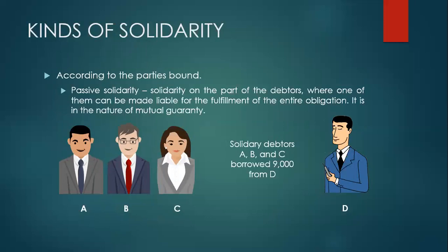Now let's go to the kinds of solidary obligation. According to the parties bound, it may be passive solidarity — when the solidarity is on the part of the debtors, where one of them can be made liable for the fulfillment of the entire obligation. It is in the nature of mutual guarantee. For example, solidary debtors A, B, and C borrowed 9,000 from D. Since the solidarity is on the part of the debtors and there is only one creditor, this is passive solidarity. Either solidary debtor is liable to pay the entire obligation — D can collect 9,000 from A, B, or C.